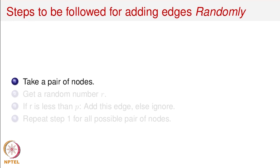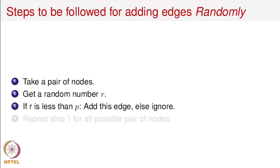We are going to take a pair of nodes. Basically we have to process all the pairs of nodes, which is n-choose-two pairs. We'll take the first pair and get a random number r between 0 and 1. If the value of r is less than or equal to p, we will add an edge between this pair of nodes. If the value of r is greater than p, we will not add an edge and we'll check the next pair.